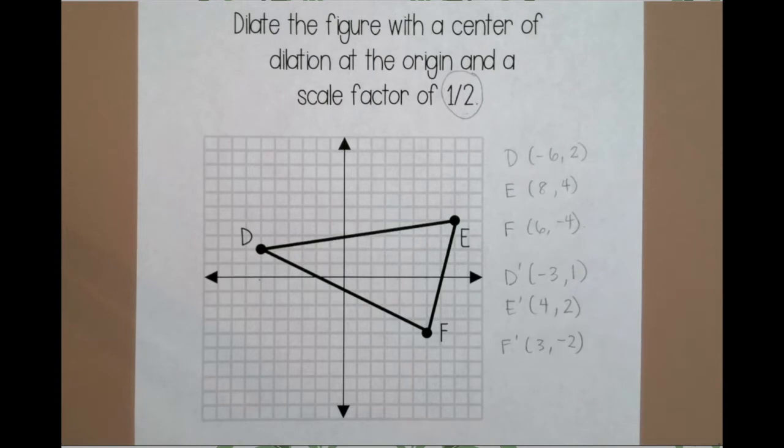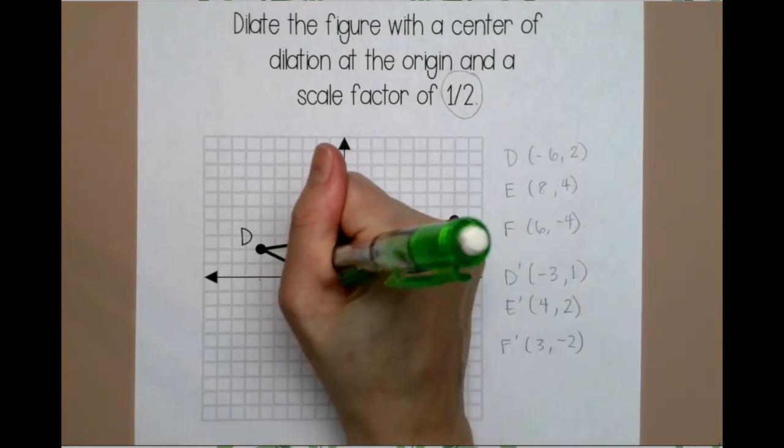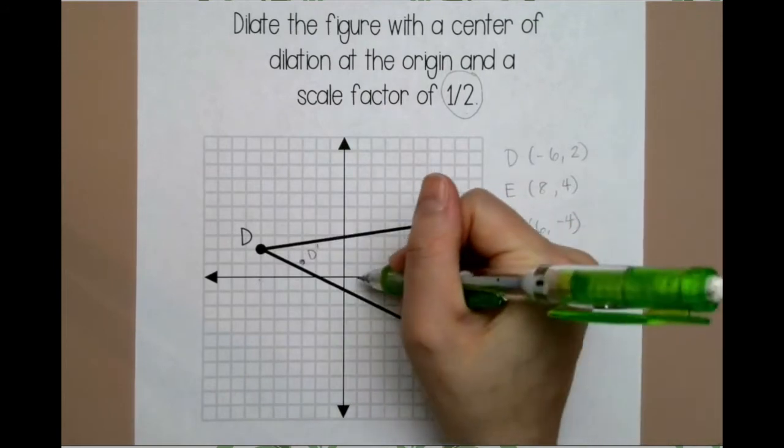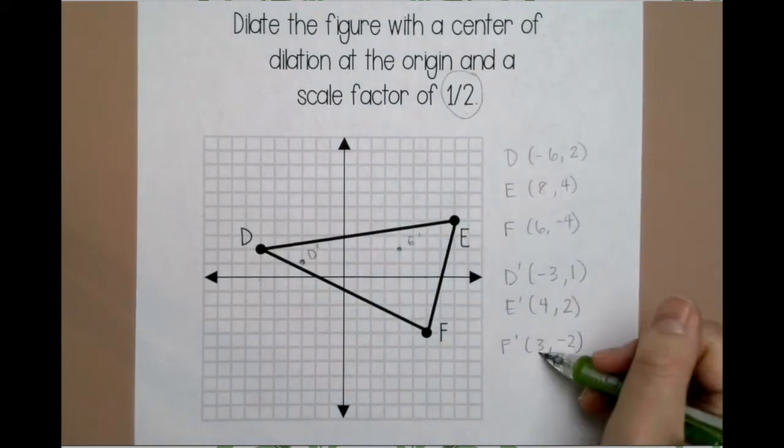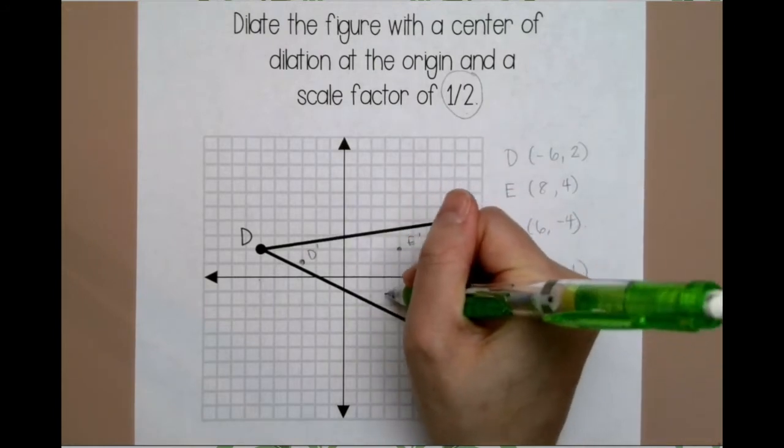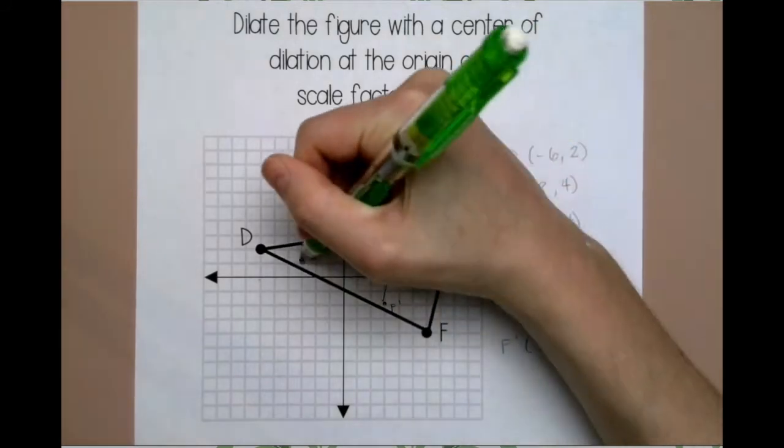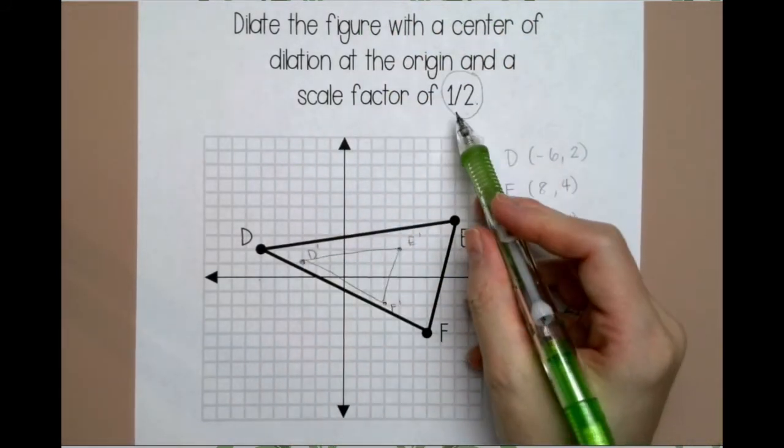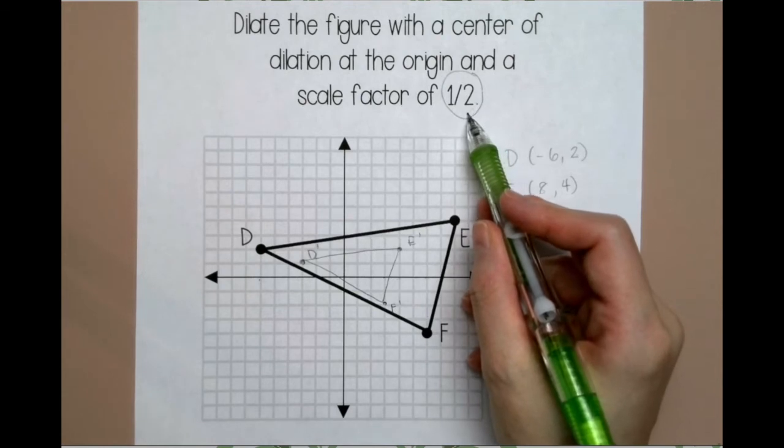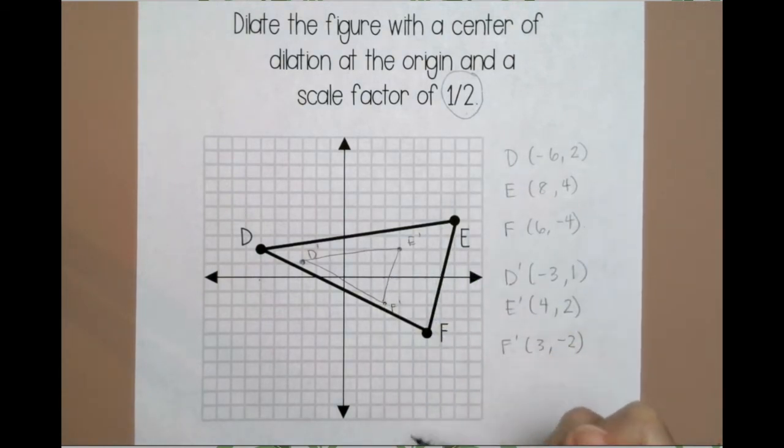And then you plot them. So -3, 1, 4, 2, and then 3, -2. Notice, because my scale factor is less than 1, my triangle got smaller. It got half the size of my original triangle.